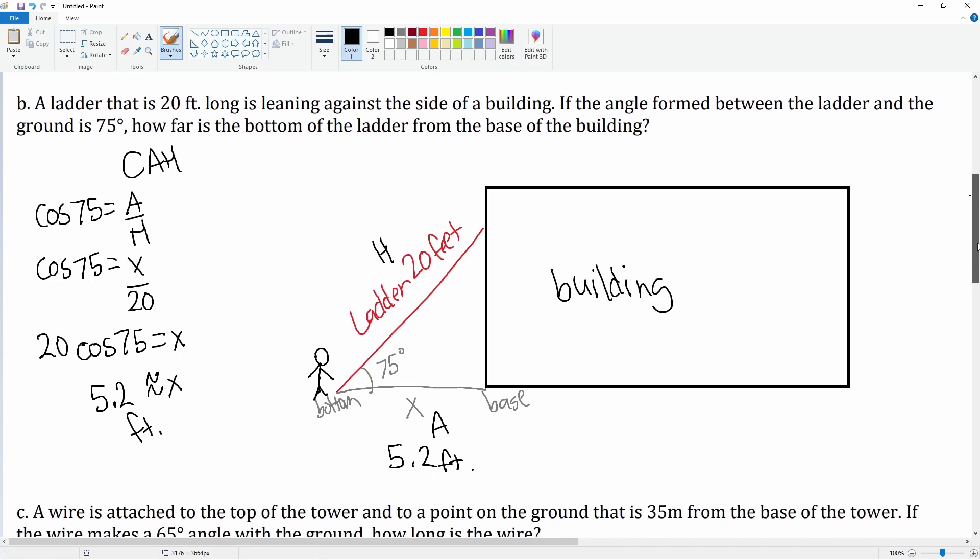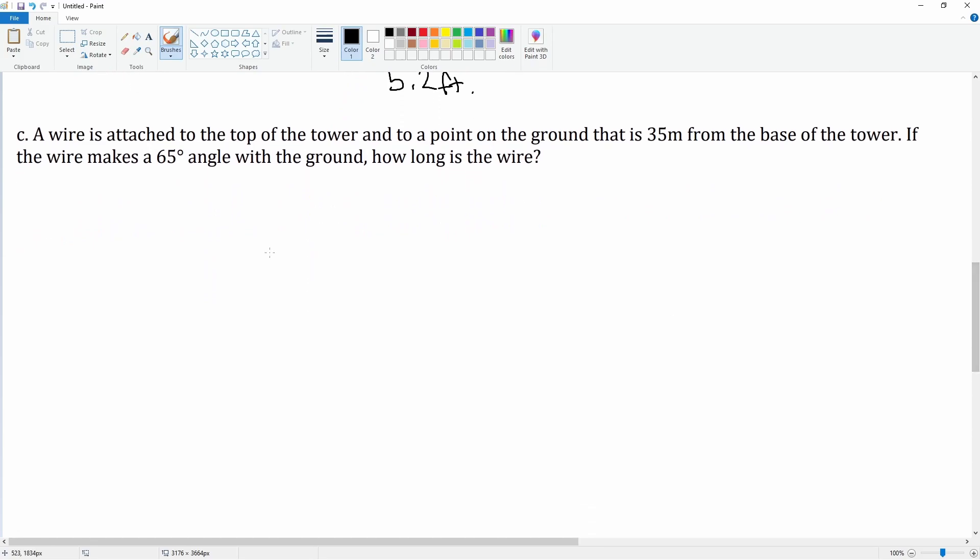Alright, and then let's do c. A wire is attached to the top of a tower, so let's just draw that tower here. Here is our tower, and then here is the ground. Here is our ground, and then the ground is 35 meters away from the tower.